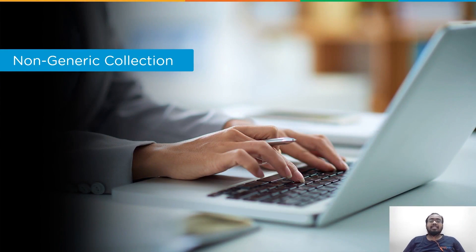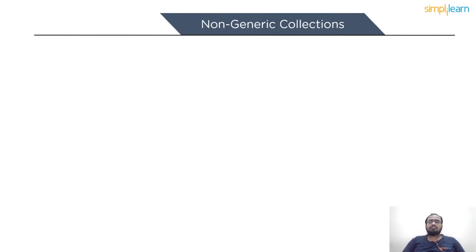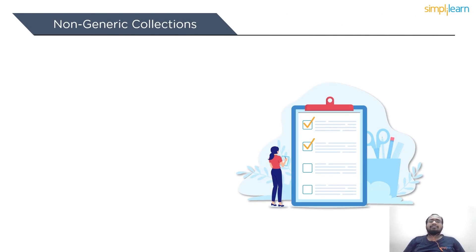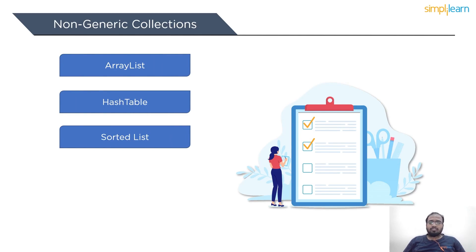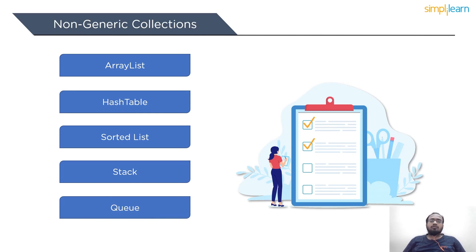Next, let's discuss non-generic collections. Non-generic collections are specialized data storage and retrieval classes that handle stacks, queues, lists, and hash tables. The system.collections namespace contains the non-generic collection classes. Non-generic collection classes store elements in object arrays internally, allowing them to hold any type of data — so the same collection can have different types of data. The types include ArrayList, HashTable, SortedList, Stack, and Queue.